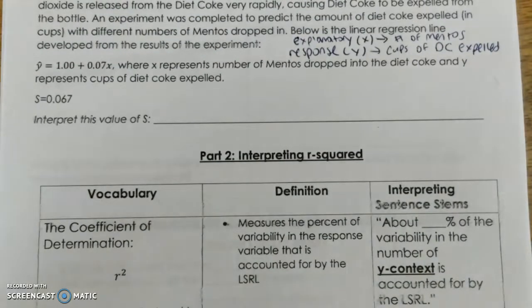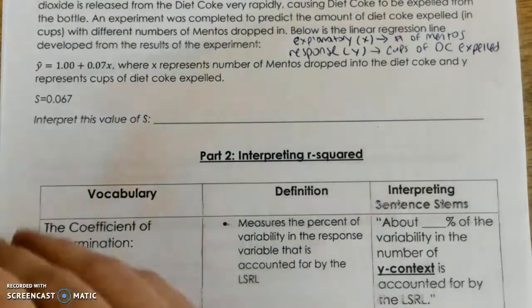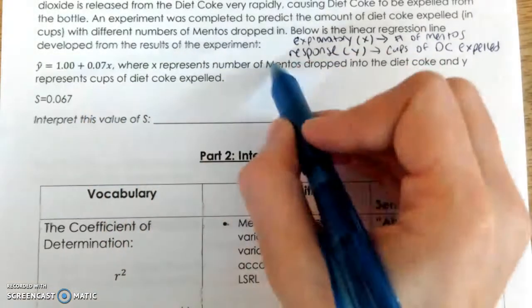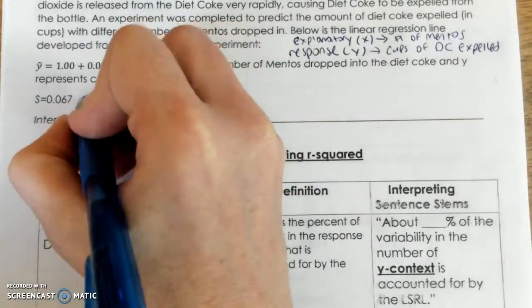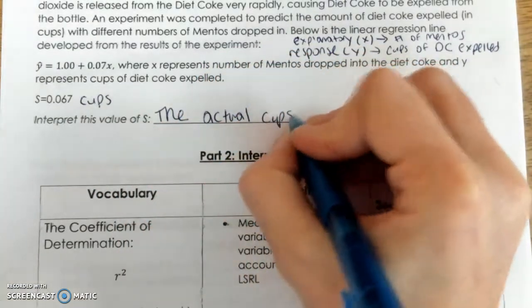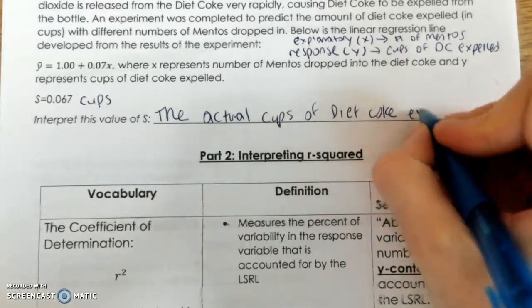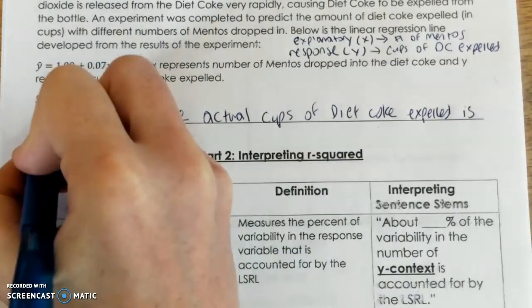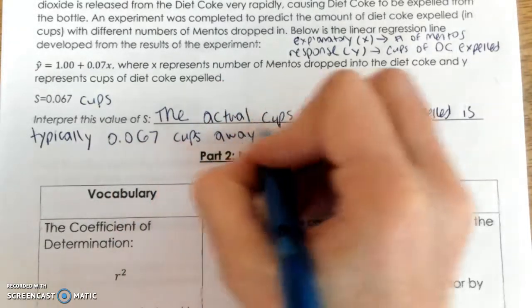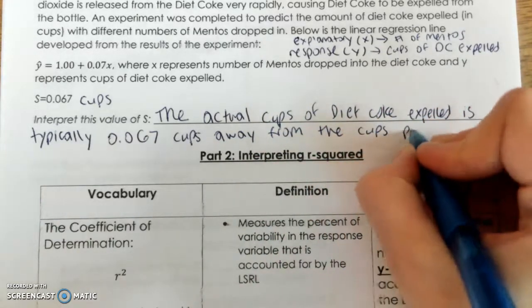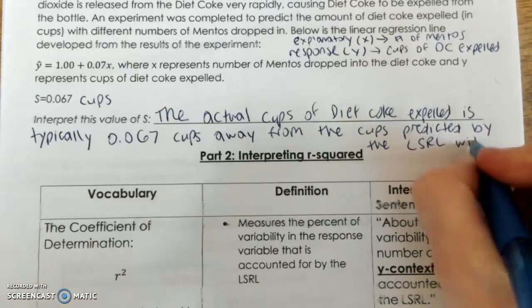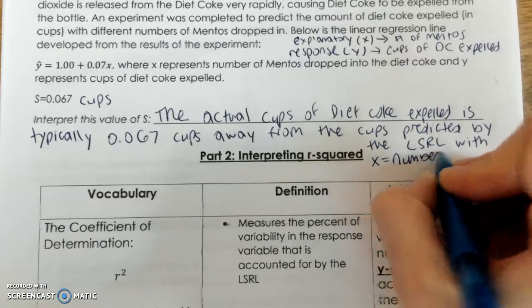All right, so now let's move on to this packet information. We're going to interpret the value of S. Before we do anything, let's slap a unit onto this S. So remember, my standard deviation of residuals is always the response variable unit. My response is cups of Diet Coke, so this is going to be 0.067 cups. All right, my interpretation. The actual cups of Diet Coke expelled is typically 0.067 cups away from the cups predicted by the least-squared regression line with X equals number of Mentos dropped in.